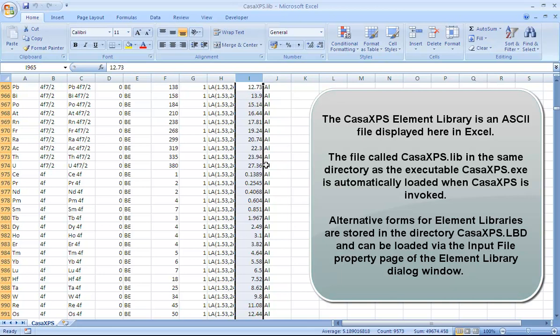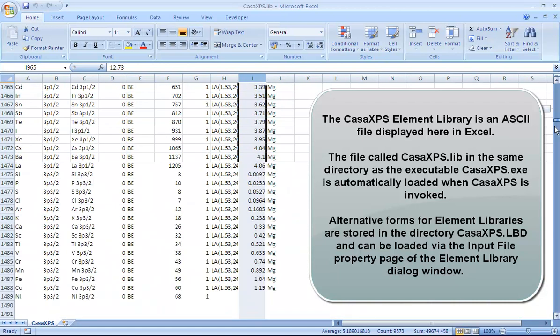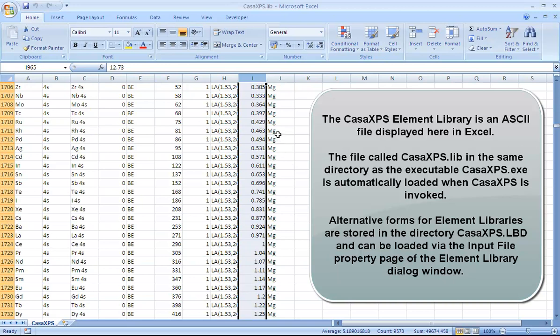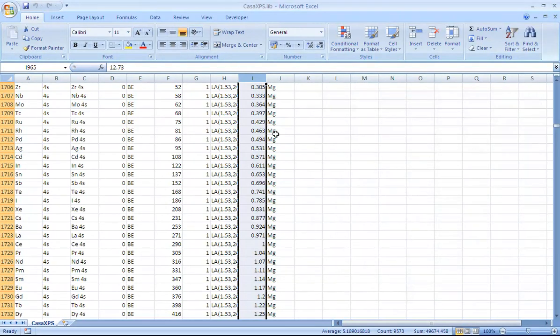These are Schofield cross sections that correspond to an aluminum anode with a given X-ray of 1486.6 eV. Within the same library, there is an entry for magnesium anode materials. This is a photon energy of 1253.6, and the RSFs are different for each one of these photo emission lines based on an aluminum versus a magnesium anode.